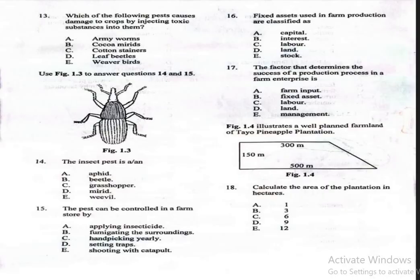Question number 13. This question says, Which of the following pests causes damage to crops by injecting toxic substance into them? A. Armyworms, B. Cocmirids, C. Cotton stainers, D. Leaf beetles, E. Weaver birds. The correct answer is Cocmirids. The damage caused by injecting toxic saliva into the plant tissues, causing necrosis.